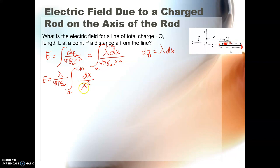So when we do this integral, we're going to put the x up in the numerator. So this is going to become, there's our constants, λ over 4πε₀. And our integral with limits of a to L plus a. And so this is going to be x⁻² dx.